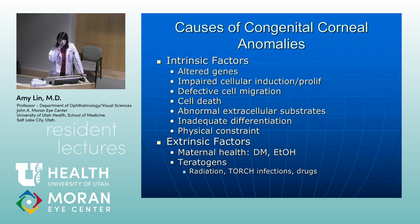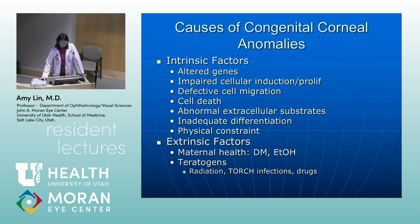There are many causes of congenital corneal anomalies, starting with intrinsic factors — genetic factors. There can be impaired cellular induction and proliferation, defective cell migration, abnormal cell death, abnormal extracellular substrates, inadequate differentiation, and physical constraints. Extrinsically, there are also factors such as maternal health and external teratogens such as radiation, TORCH infections, and medications.